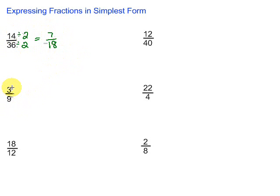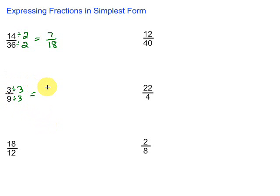Let's take a look at the next one: 3 over 9. It's helpful to first check if the top number will go into the bottom one. If that's the case, we'll just divide by the top number. Here, 3 goes into 9, so we can divide by 3 on the top and the bottom. 3 divided by 3 is 1, and 9 divided by 3 is 3. So we're left with 1 third.